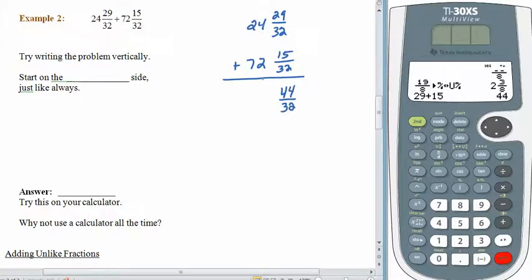And of course, we can add the whole numbers. 4 and 2 is 6. 2 and 7 is 9. So, we always want to start on the right-hand side. What's our problem here? When we look at the fraction, again, we see that it's improper. And we want to convert it.